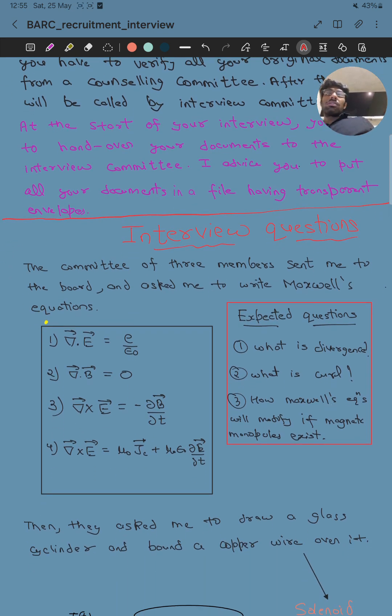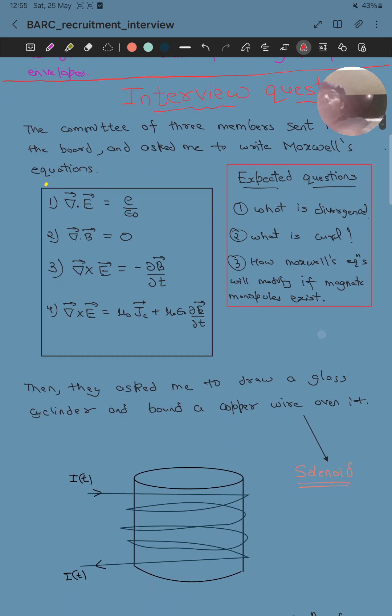There were three members and they sent me to the board and asked me to write Maxwell's equations. I wrote the Maxwell equations. You should keep one point in mind that you should not say like del dot E. You should say divergence of electric field equals charge density divided by epsilon naught, divergence of magnetic field equals zero, curl of electric field equals rate of change of magnetic field. You should explain it, not just say the mathematical formula.